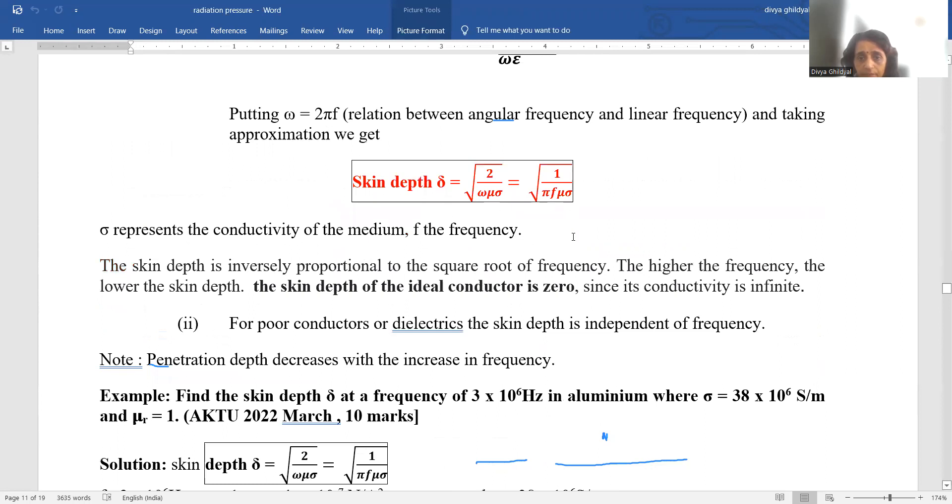Skin depth is inversely proportional to the square root of frequency. The higher the frequency, the lower the skin depth. So skin depth for an ideal conductor is 0.